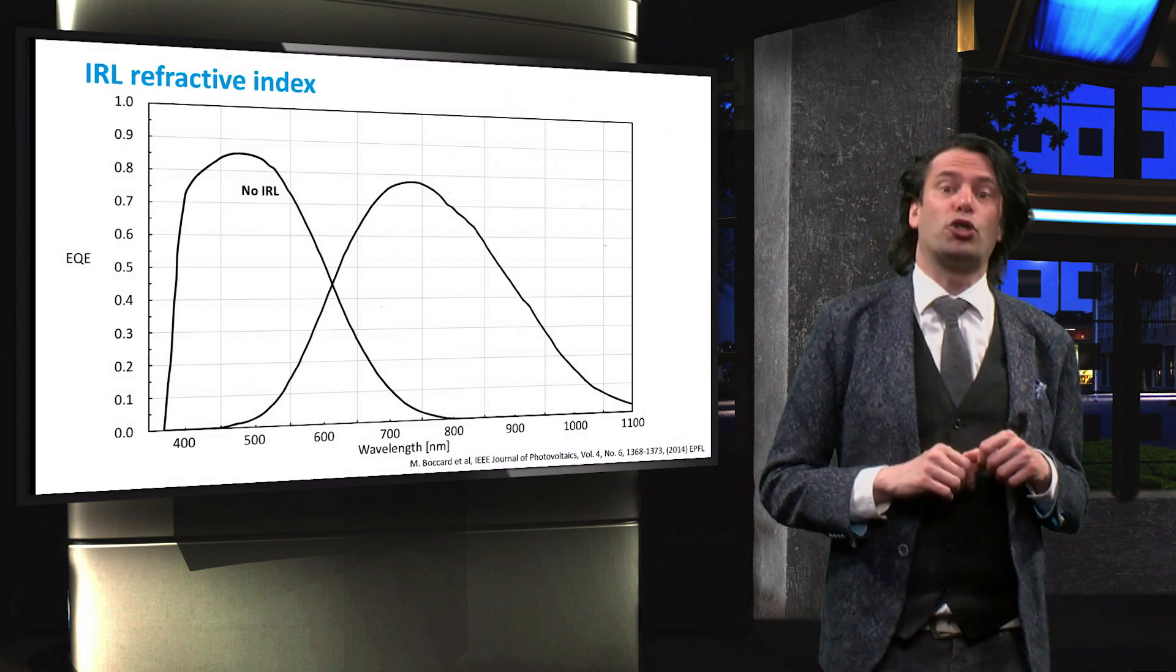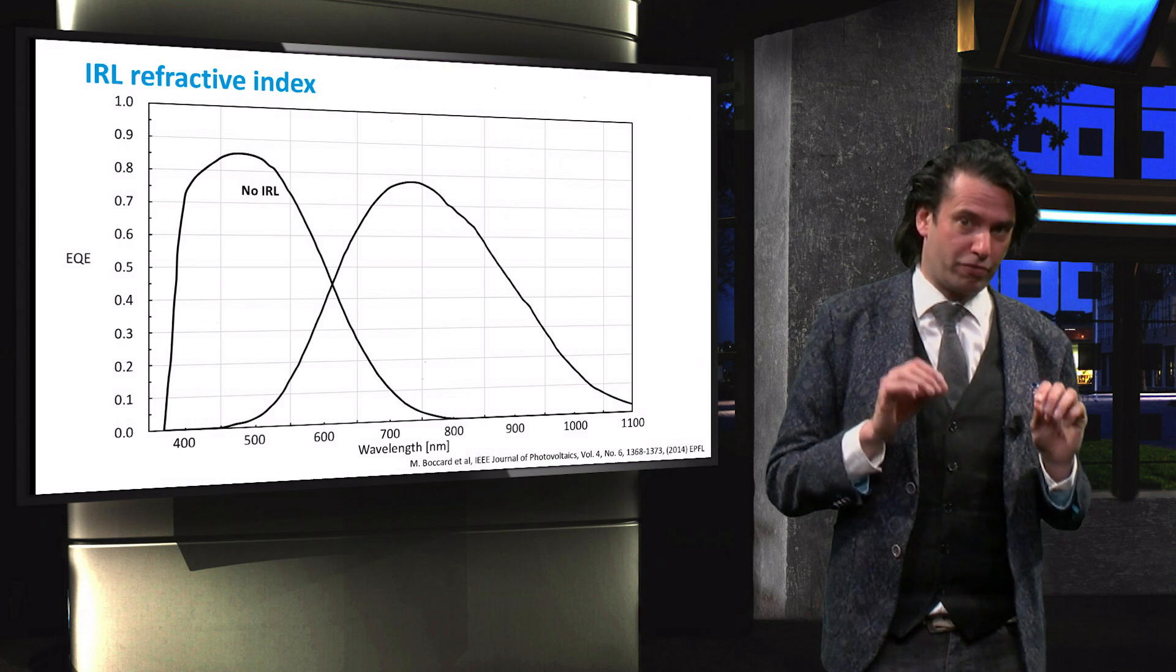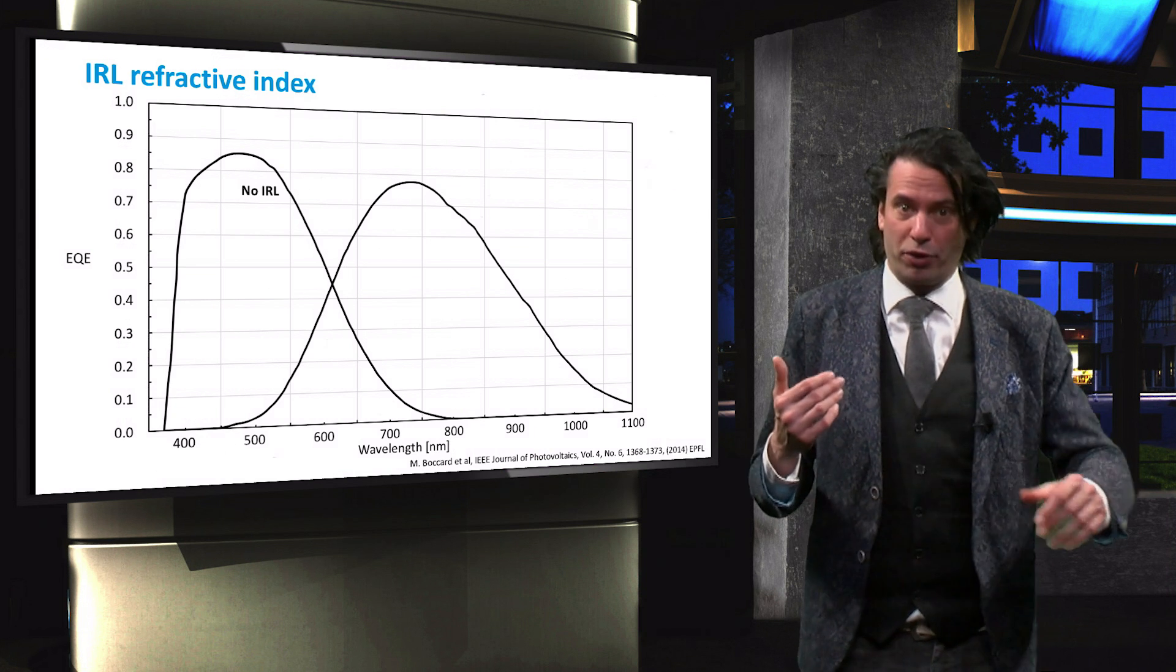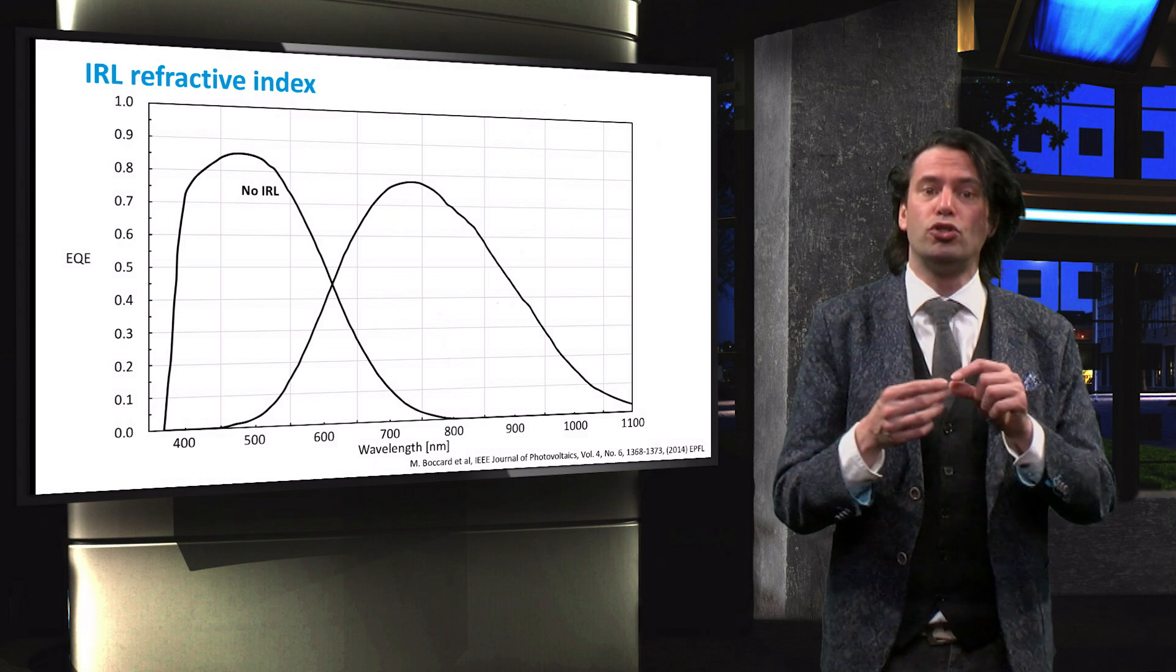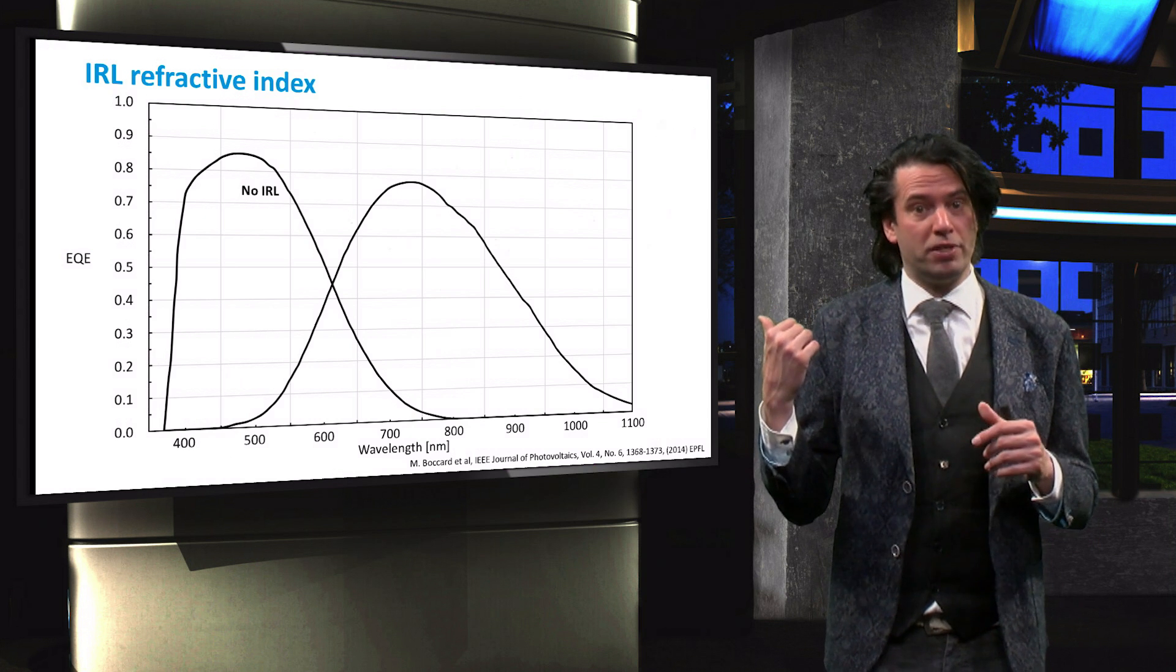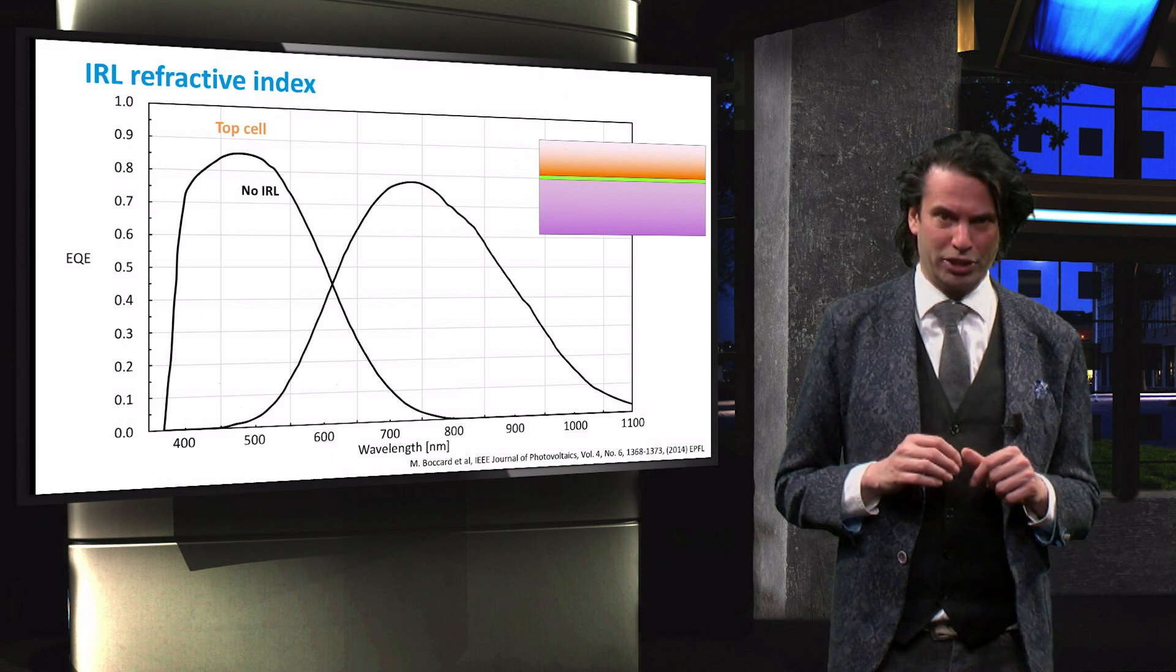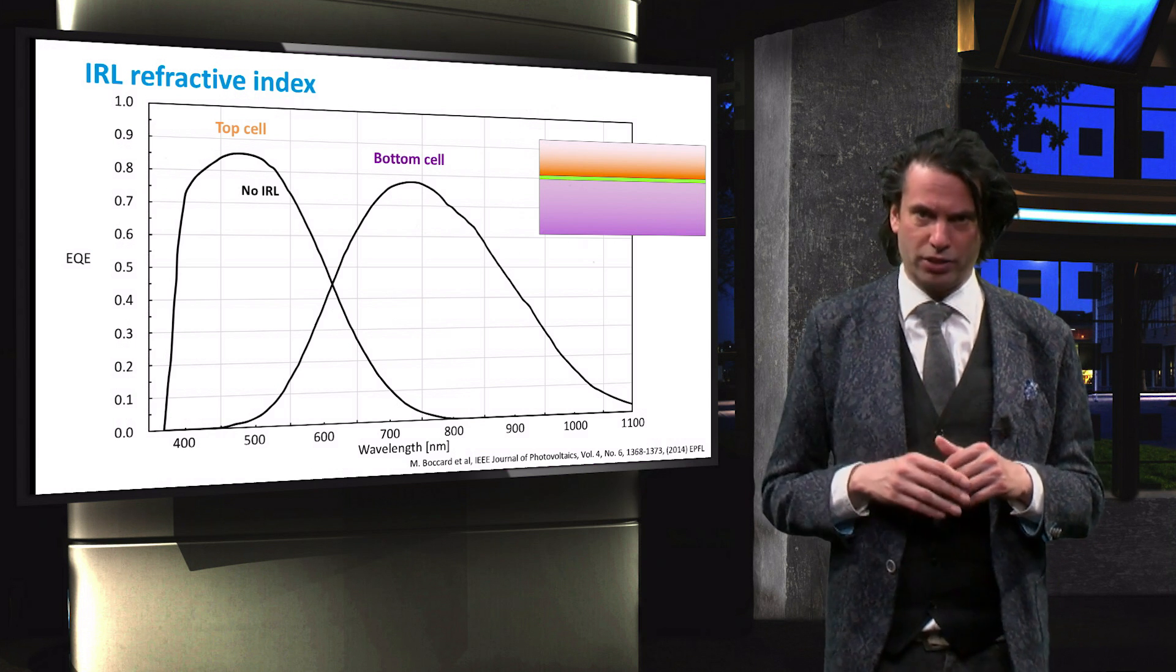This figure shows the external quantum efficiency of both cells without an intermediate reflective layer. The external quantum efficiency, as you may recall, is the ratio of the number of incident photons to the number of collected electrons, and is wavelength dependent. We can gather from this figure that the top cell operates in the high energy low wavelength region. The bottom cell operates in the higher wavelength region.